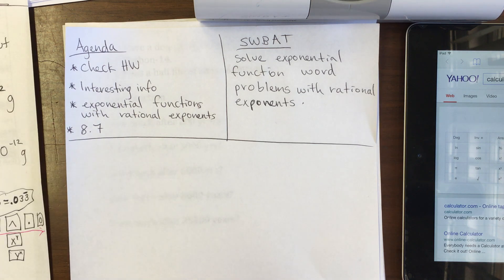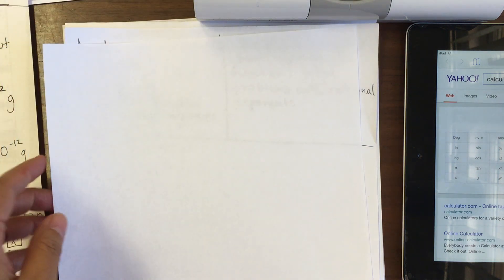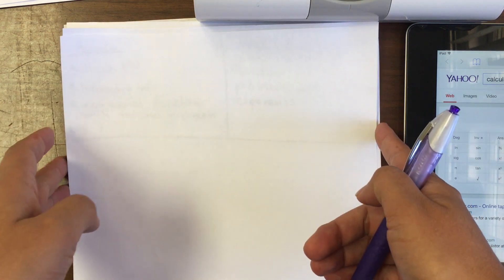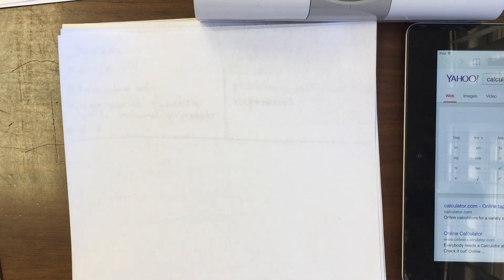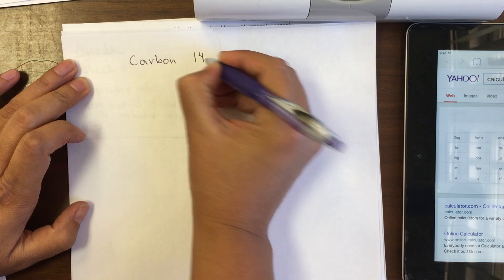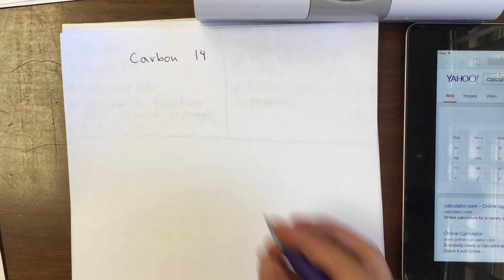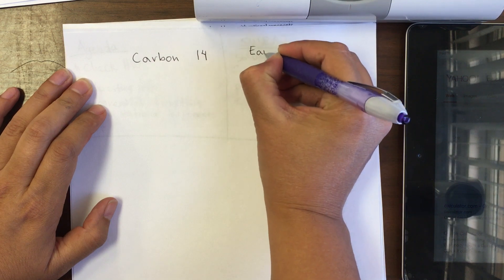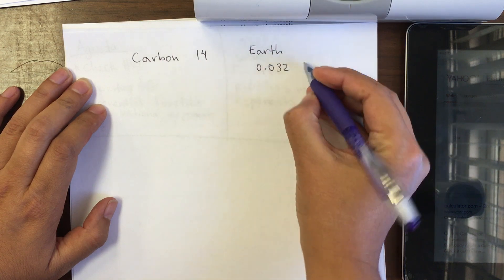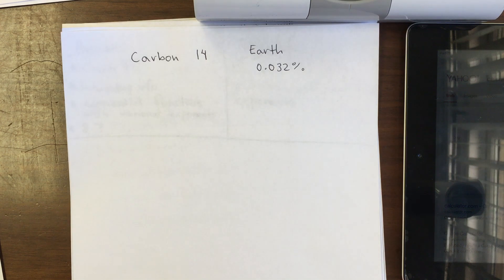I wanted to share a little bit about what they do in science. You might ask yourself: how can they know how old bones are when they find them, or how do they know how long rocks have been on earth? What they use in science is something called, among other things, carbon-14. On earth, about 0.032% is carbon-14.